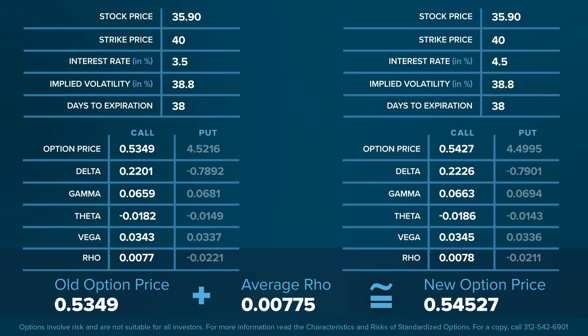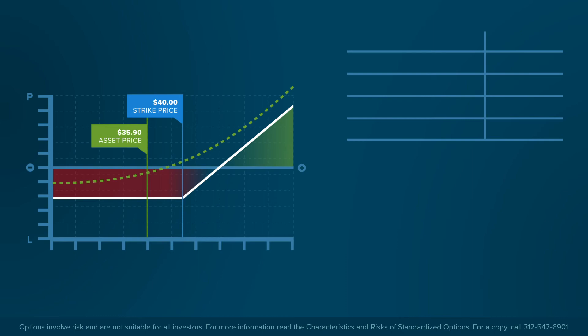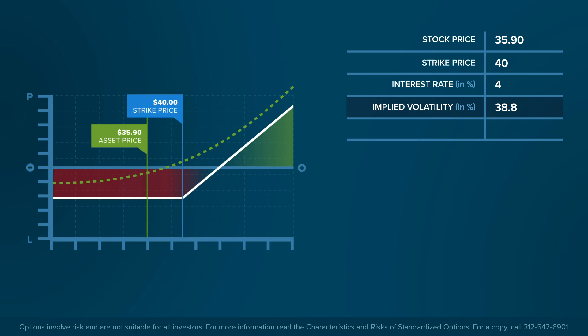Now let's put it all together. Using the following assumptions, we can see the estimated value of a call option. Let's use a share price of $35.90, a strike price of $40, and assume an interest rate of 4%. Let's assume an implied volatility reading of 38.8% for the underlying, and say the option contract has 38 days to expire. The call price works out to be almost $0.54.